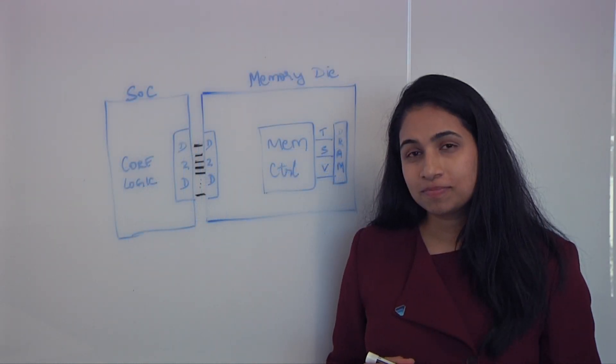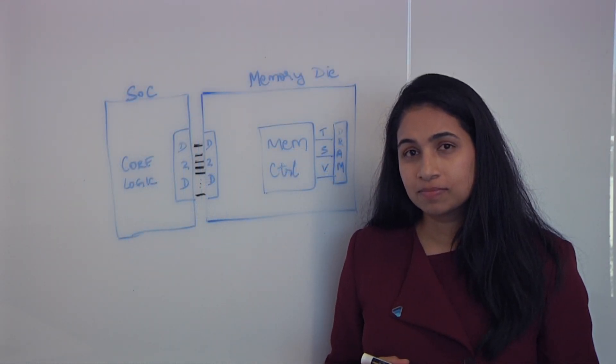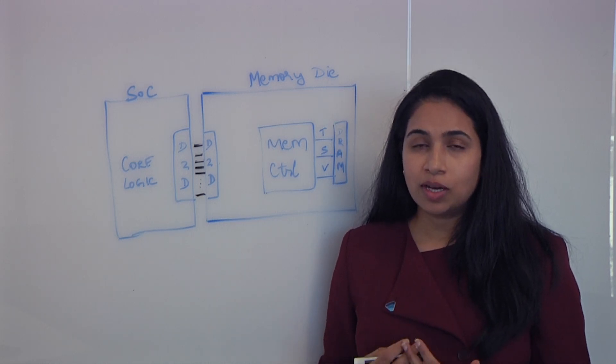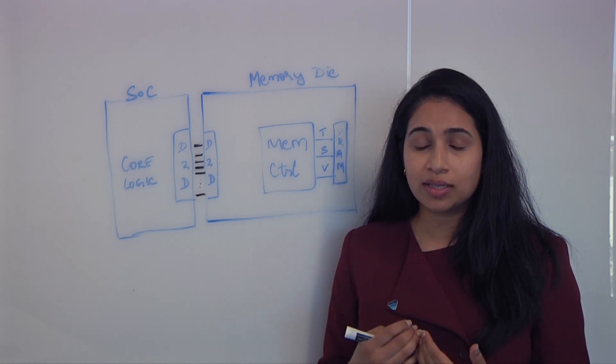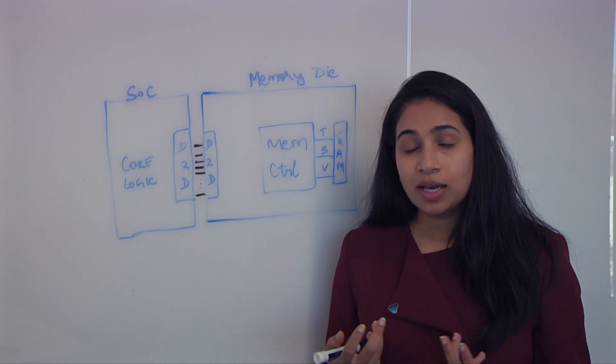When you're dealing with DRAM, you really don't want heat in there. Now you're adding a lot more logic in the bottom. What's the impact of that? How do you manage that heat? Exactly. That's a big problem when it comes to any time you stack logic on top of logic. How do you dissipate all of that energy?